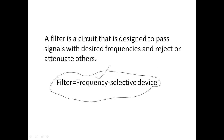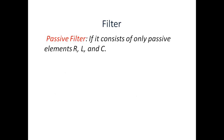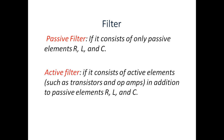Now let us discuss the types of filters based on the electronic components used in the circuit. First we have the passive filter — if a circuit consists only of passive elements like resistors, inductors, or capacitors, then that is called a passive filter. The other type is the active filter — if along with resistors, inductors, and capacitors, transistors and op-amps are also present, then that is called an active filter.